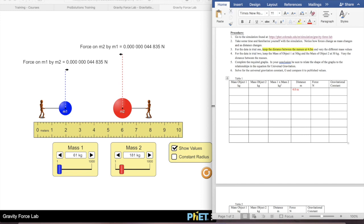And then it says vary the mass values. I've already got some values, so I'm just going to leave those. 61 kilograms for the first one and 181 kilograms for the second one.